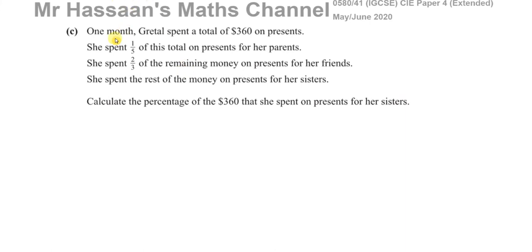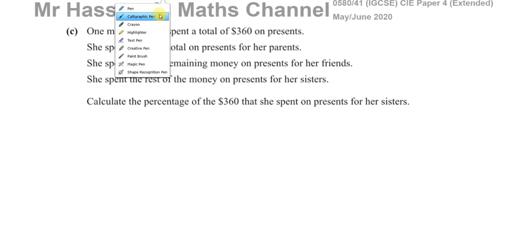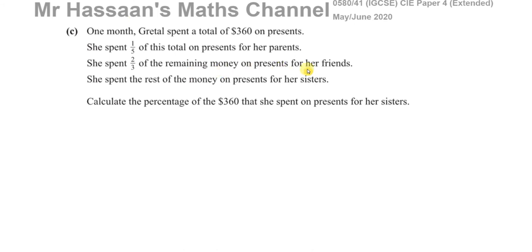Then part C. Gretel spent a total of $360 on presents one month. She spent one-fifth of this total on presents for her parents, then two-thirds of the remaining money on presents for her friends. You've got to be careful here — this is a bit of a trick. It says two-thirds of the remaining money, not two-thirds of $360. That's a very important phrase, because it's two-thirds of what's left after she spent one-fifth on her parents.